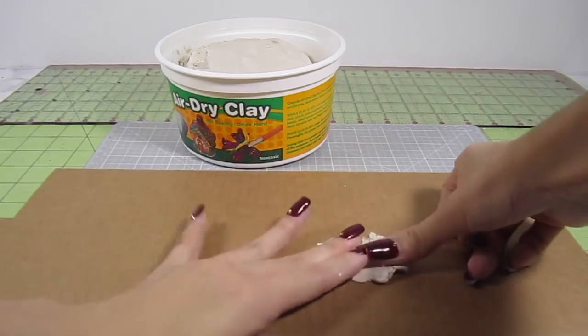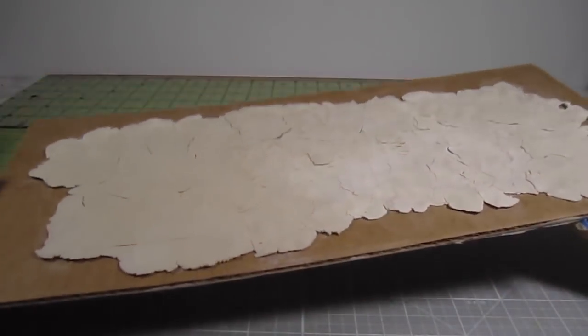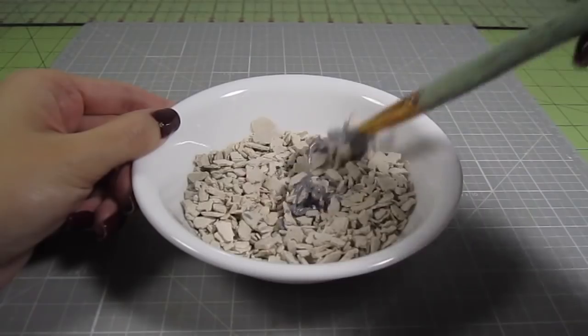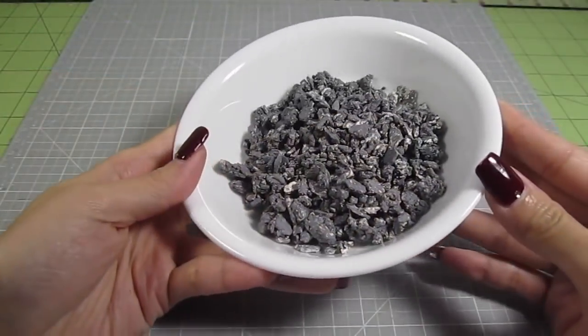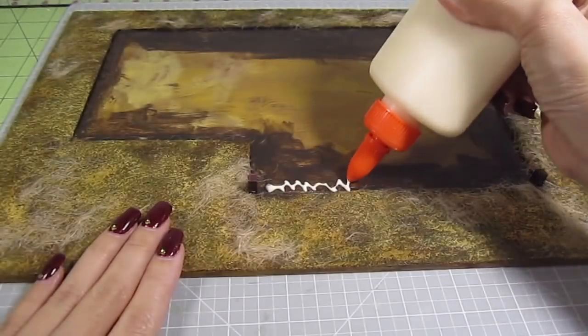For some rocks, spread out some air dry clay, wait for it to dry, and then break it into tiny pieces. Mix in some gray paint and you have some realistic looking rocks. Glue these onto the wood and grass.